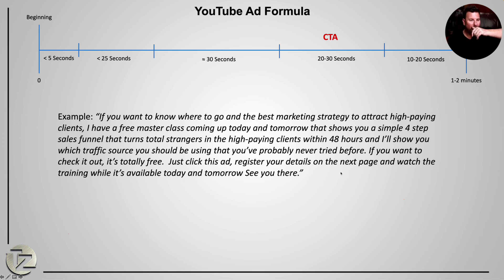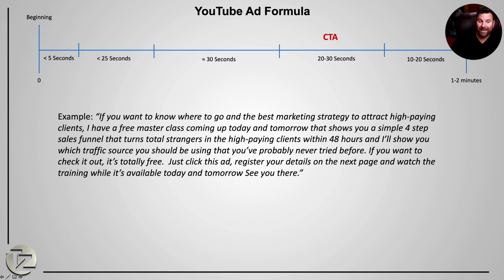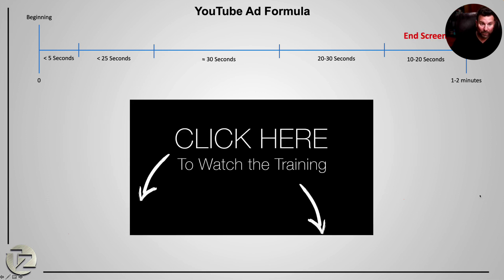Let me give you one last bonus tip: if you can add some curiosity in there to make them say 'What is this four-step funnel? What is the traffic source he's talking about?' — you're going to get far more people who click. So I try to do all five things: here's what I've got, here's what it will do for you, here's what to do next, here's why you should do it right now, and incorporate some curiosity about what they'll discover on the next page. Then the last step is just a blank screen that says 'click here' with some animated arrows, giving them time to click before the next video loads.